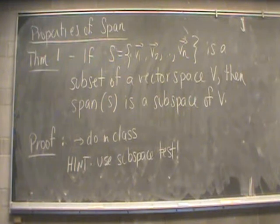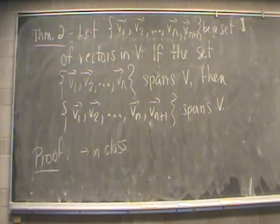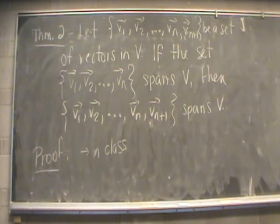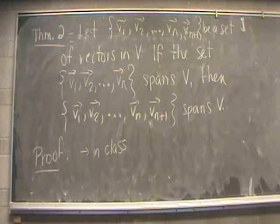Now we look at the properties of spanning sets, given as two theorems. Theorem 1: if S = {v1, v2, ..., vn} is a subset of vector space V, then span(S) is a subspace of V. Theorem 2: if {v1, ..., vn} spans the entire vector space V, then adding any additional vector vn+1 to that set means the larger set {v1, ..., vn, vn+1} also spans V. In other words, adding more vectors to a spanning set doesn't change the spanning property.